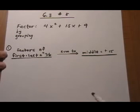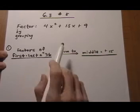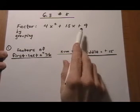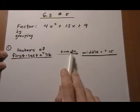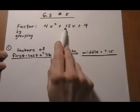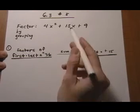First we're going to look at factors of the first term times the last term, so 4 times 9, which is positive 36. And we're going to see which ones of those add up to the middle term of plus 15. Whichever one works, we're going to use that to split the middle term.